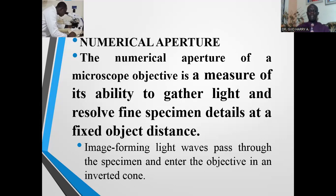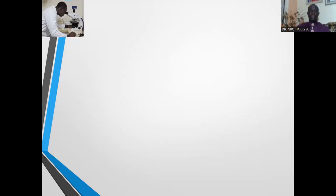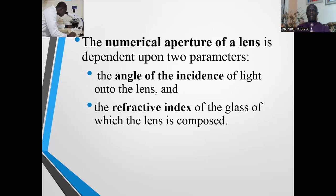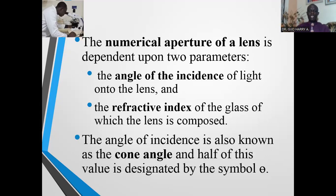The image-forming light waves pass through the specimen and enter the objective in an inverted cone. The numerical aperture of a lens depends on two parameters: the angle of incidence of light onto the lens and the refractive index of the glass of which the lens is composed. The angle of incidence is also known as the cone angle, and half of this value is designated by the symbol theta.